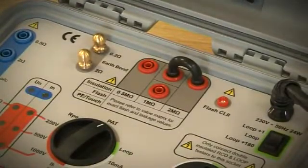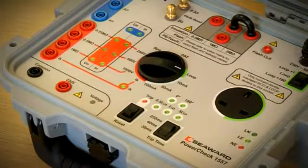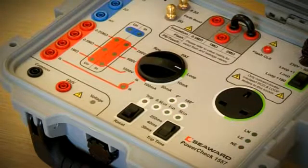To check 17th edition test equipment, plug the PowerCheck 1557 into a main supply. The LED lights will flash to indicate it's powering up.